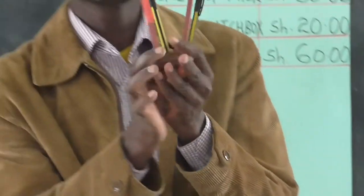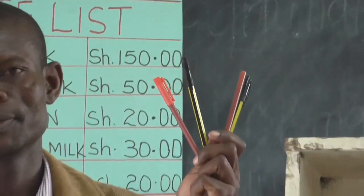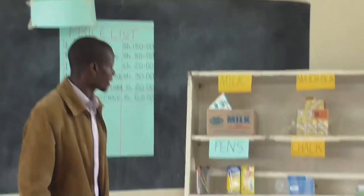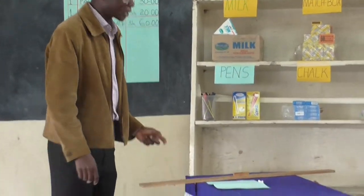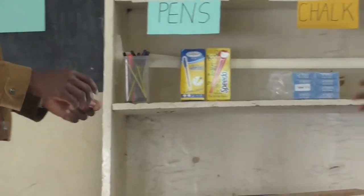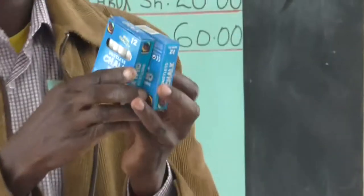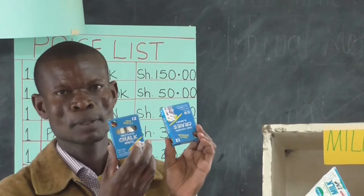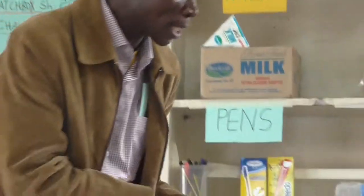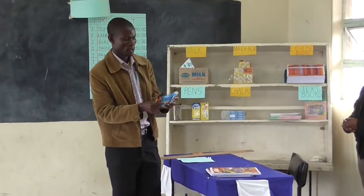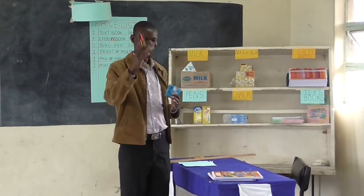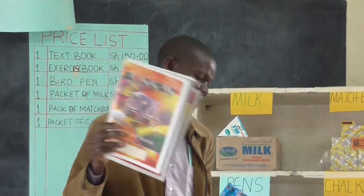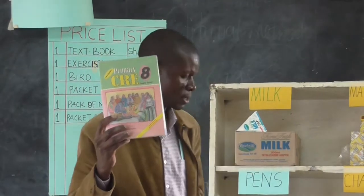From this shop again I am going to buy four pens, and two packets of chalk. So altogether I am going to buy the following items: two packets of chalk, four pens, two exercise books, and one CRE textbook.